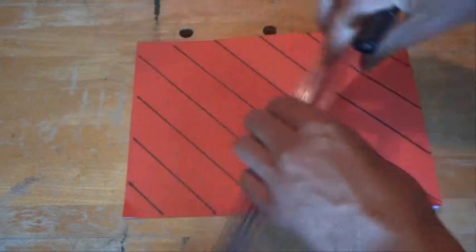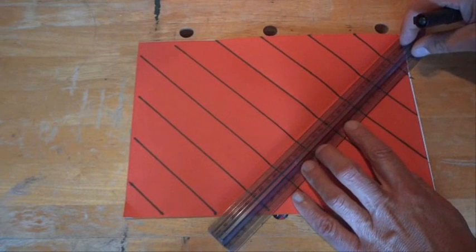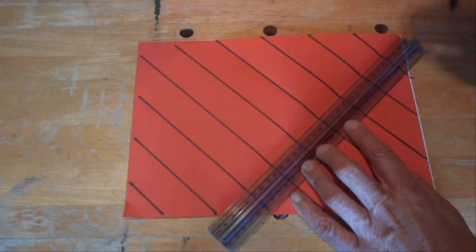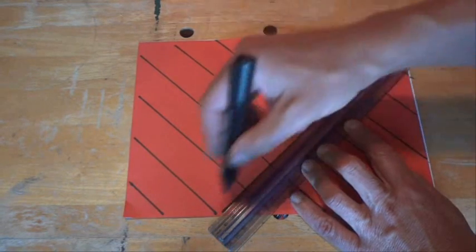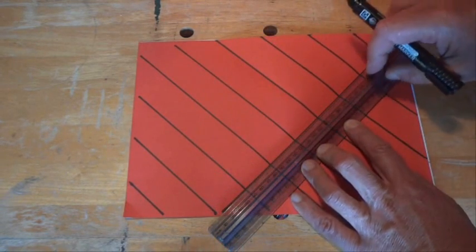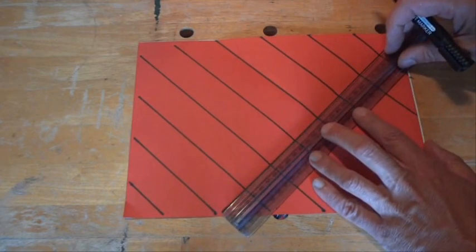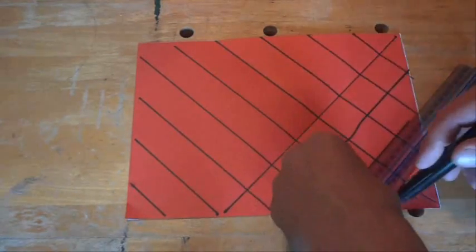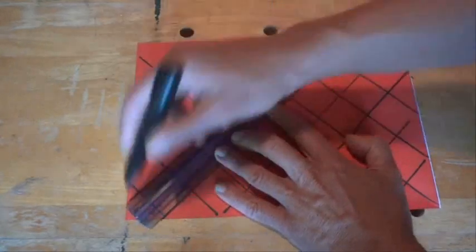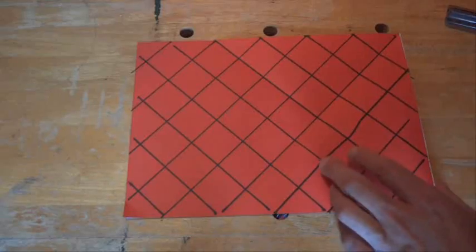So we've got our parallel lines marked one way, and now we'll do our parallel diagonal lines the other way. We're going to mark along that diagonal line, the crease there we've made to begin with.